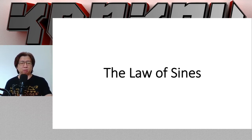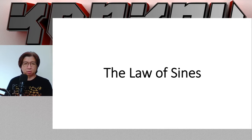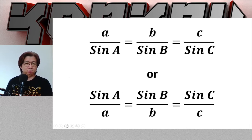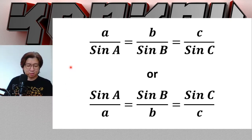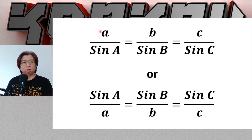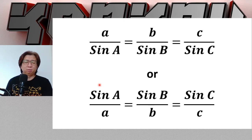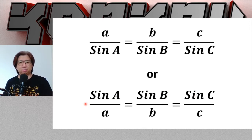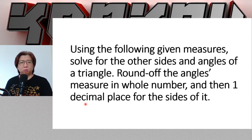Here are the formulas for the Law of Sines, where the sides of triangle ABC are proportional — you can see they are all equal to the sines of their opposite angles. To find the side of a triangle, use the formula with sides on top. To find the measure of an angle of a triangle, use the formula with sines on top. Now let us have some examples.